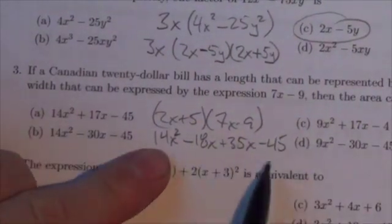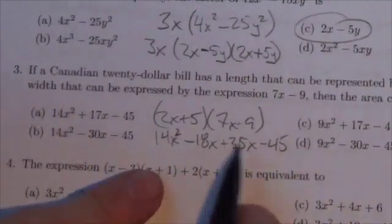So I'm going to have 14x squared. I know I'm going to have the negative 45, so I've got three options here. The question is, what happens in the middle?